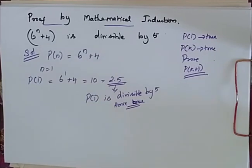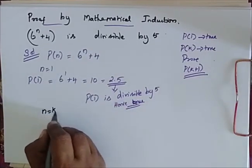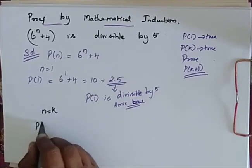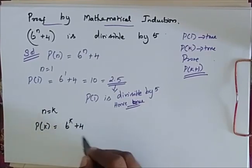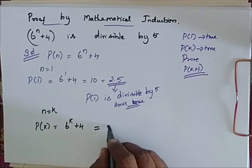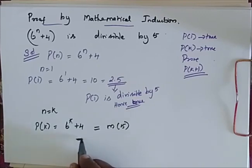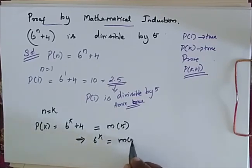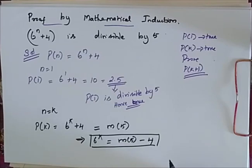Since it is true for 1, we say that it is true for n is equal to k. So my P of k is equal to 6 power k plus 4, which is equal to some multiple of 5. Here I can write my 6 power k as 5m minus 4. Remember this — we are going to use this in the further proof.